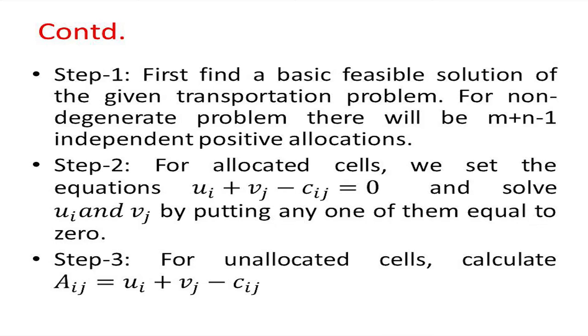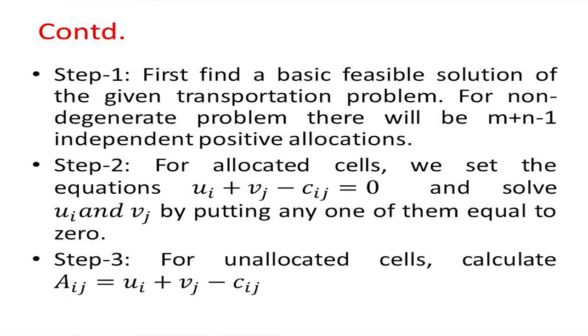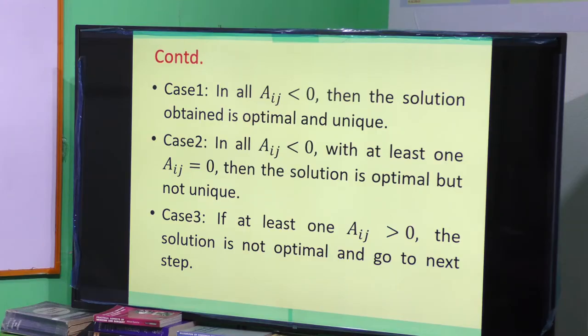For a non-degenerate problem there will be m plus n minus one independent positive allocations. Step two: for allocated cells we set the equations u_i plus v_j minus c_ij equal to zero. From this we solve the variables u1, u2, u3 and v1, v2, v3 by putting any one of them equal to zero. Step three: for unallocated cells we calculate delta_ij equal to u_i plus v_j minus c_ij. Case one: if all delta_ij are less than zero, then the solution obtained is optimal and unique.